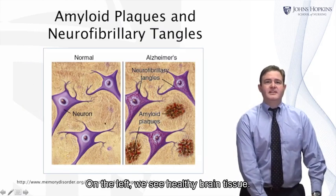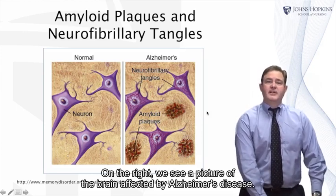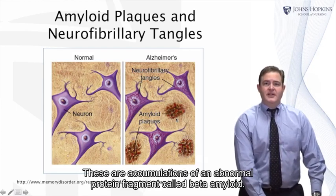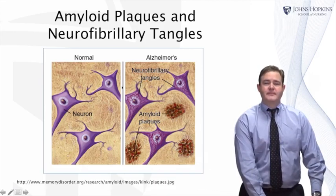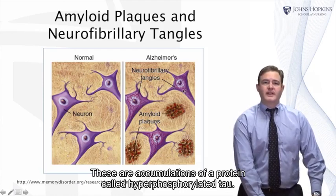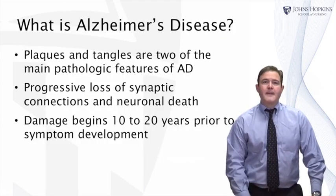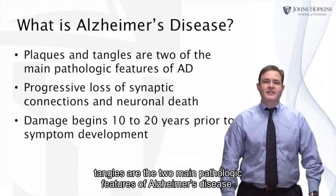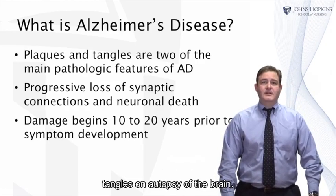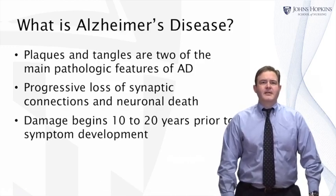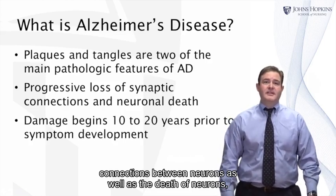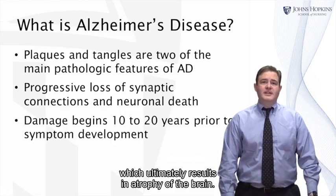Here we see the pathologic hallmarks of Alzheimer's disease: amyloid plaques and neurofibrillary tangles. On the left, we see healthy brain tissue. On the right, we see a picture of the brain affected by Alzheimer's disease. Outside of the cell, we see amyloid plaques — accumulations of an abnormal protein fragment called beta amyloid. Inside the cells, we see neurofibrillary tangles, which are accumulations of a protein called hyperphosphorylated tau. Plaques and tangles are the two main pathologic features of Alzheimer's disease, and initially we were only able to see them on autopsy of the brain.